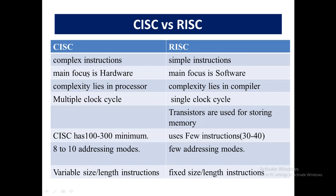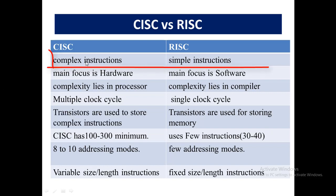CISC versus RISC. As we discussed earlier, CISC has complex instructions because it is used to perform complex operations like floating point calculations such as sine, theta, and tan. All these types of calculations are done in CISC, while RISC has simple instructions that perform simple and basic operations with very few instructions.